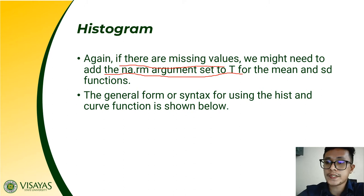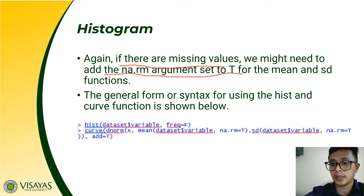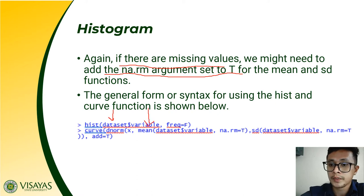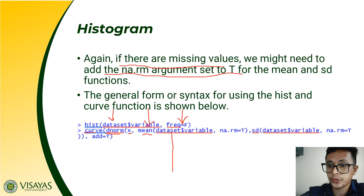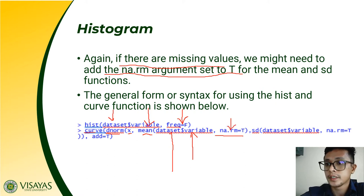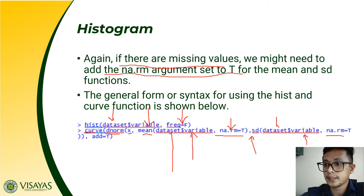The general syntax for using the hist and curve functions is: hist(dataset$variable, freq=F), then curve(dnorm(x, mean=mean(dataset$variable, na.rm=T), sd=sd(dataset$variable, na.rm=T)), add=T). Set freq=F for the histogram, then add the curve with dnorm using the mean and sd functions. Use na.rm=T to exclude missing values, and add=T to append the curve to the histogram.